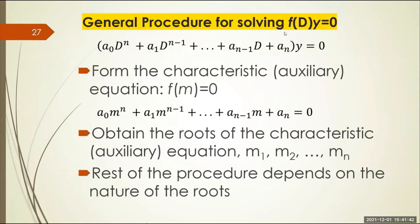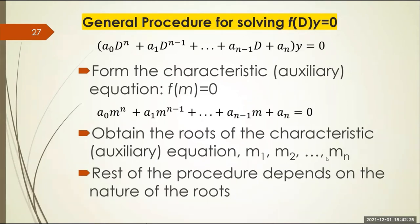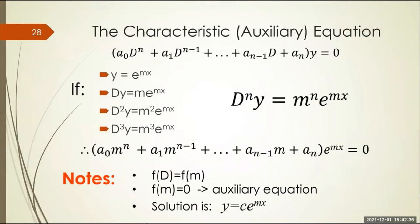The general procedure for solving is: step one, form the characteristic or auxiliary equation f(m) equals zero by replacing D with m and removing y. Step two, obtain the roots of the auxiliary equation — m1, m2, and so on depending on the order. The rest of the procedure depends on the nature of the roots. For this lecture, we discuss only real roots: case 1, real and distinct, and case 2, real and repeated.